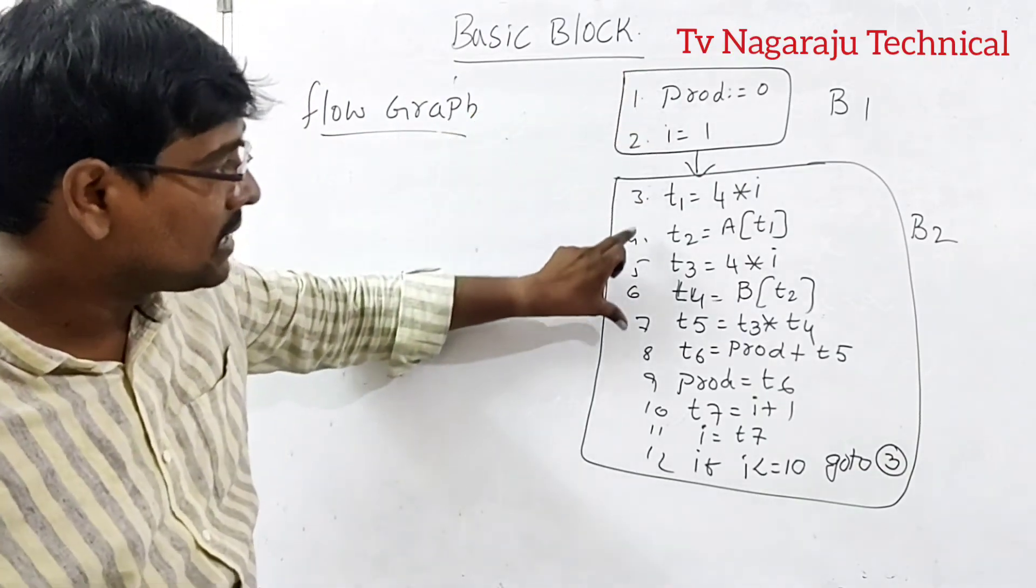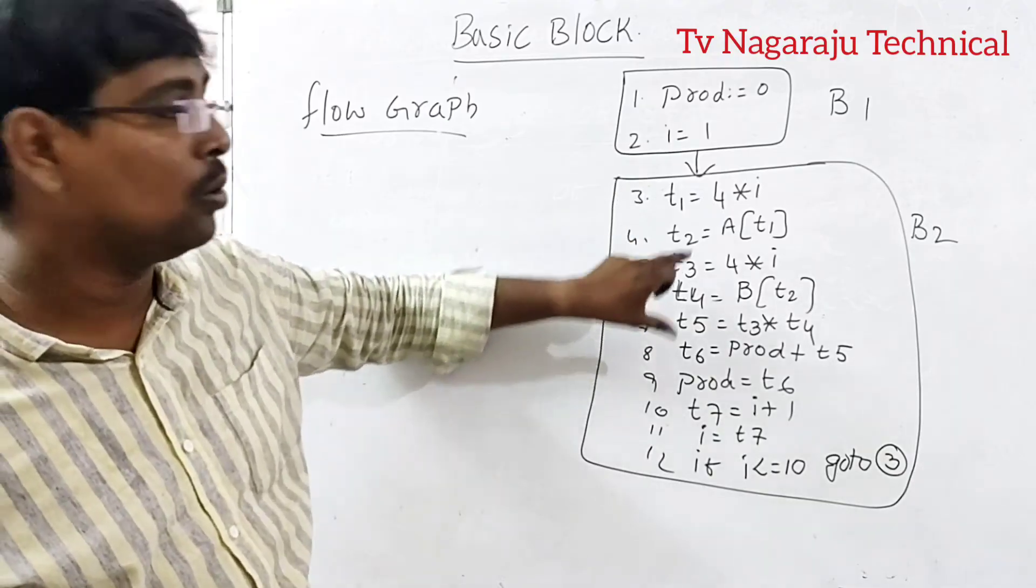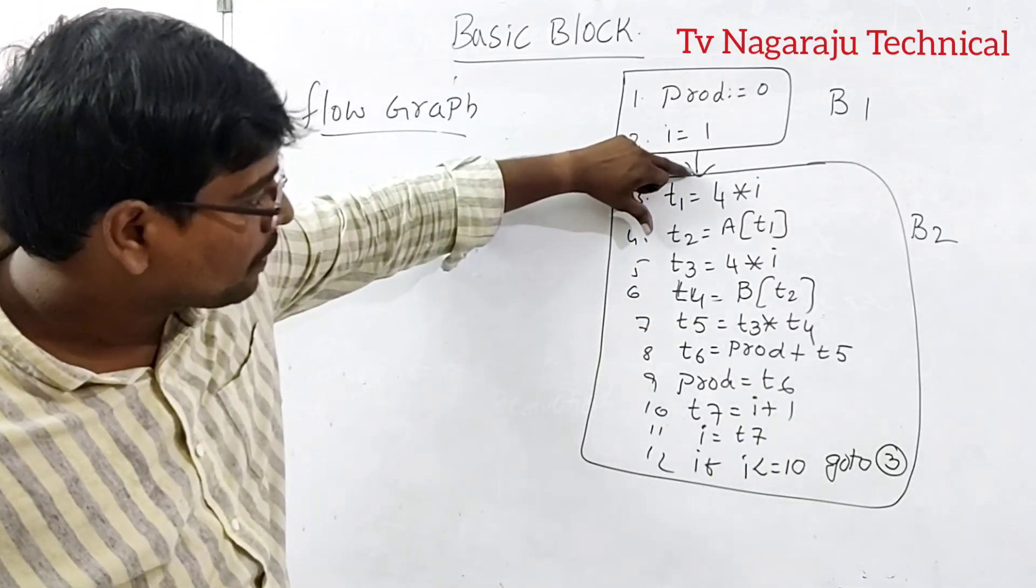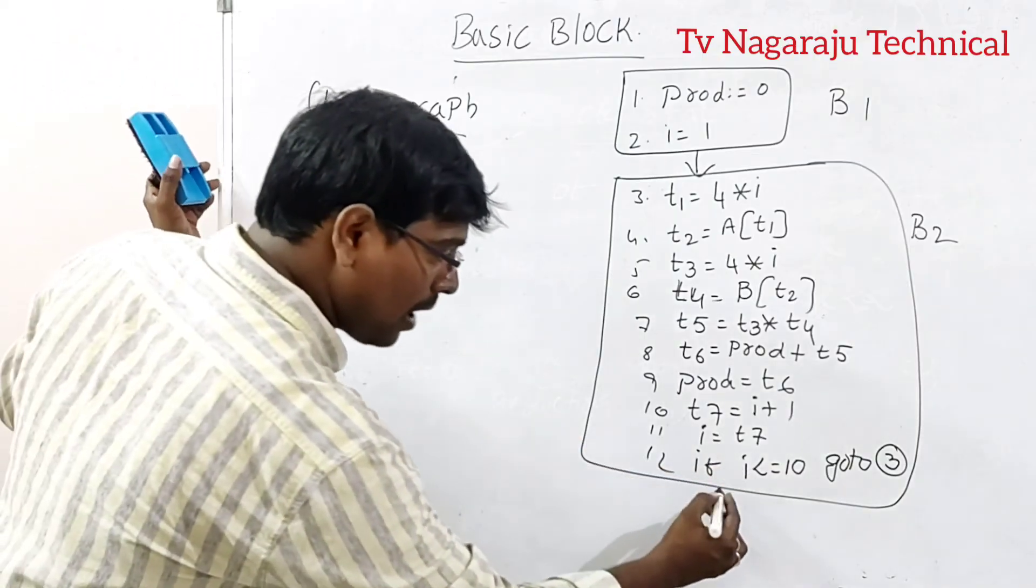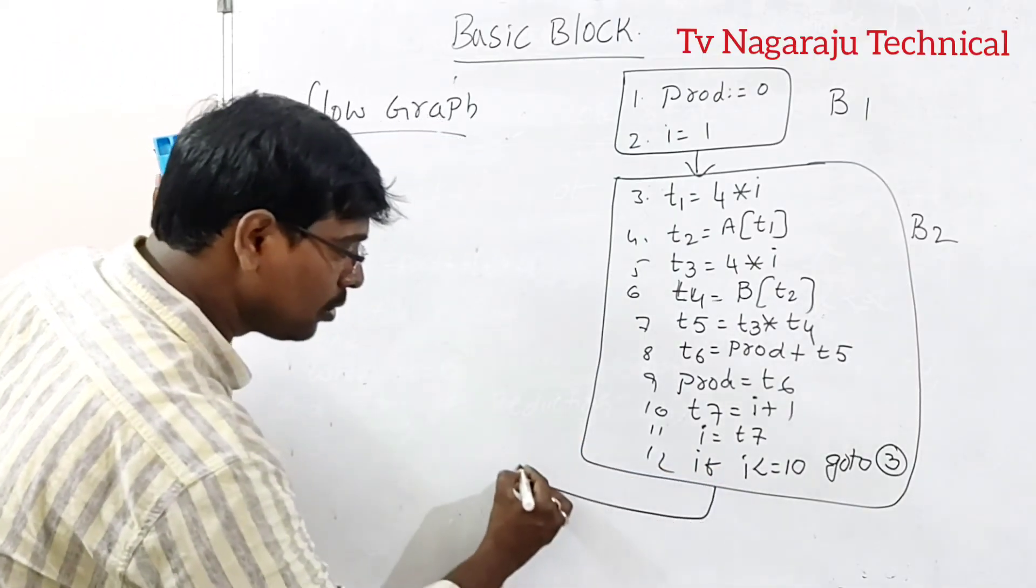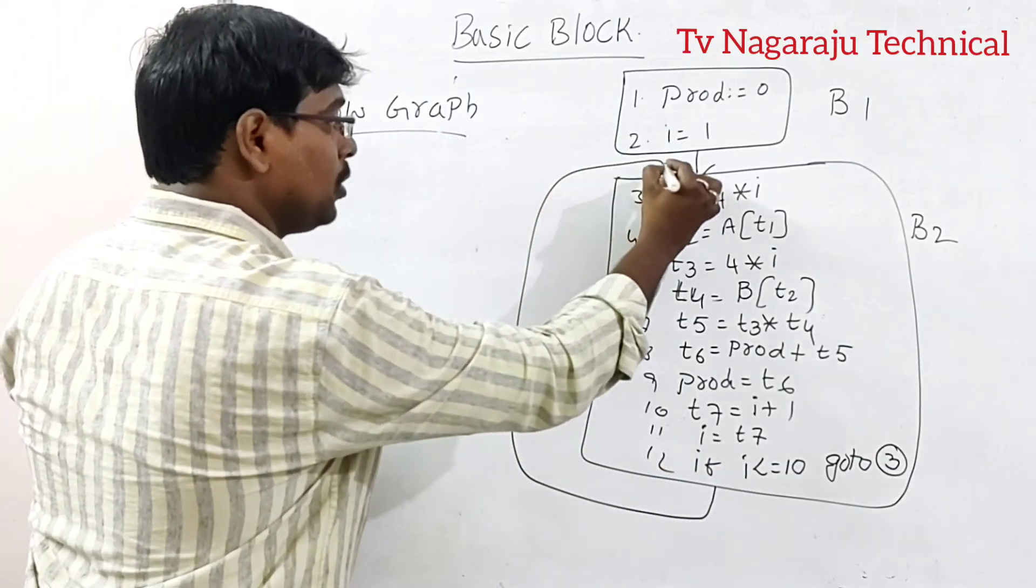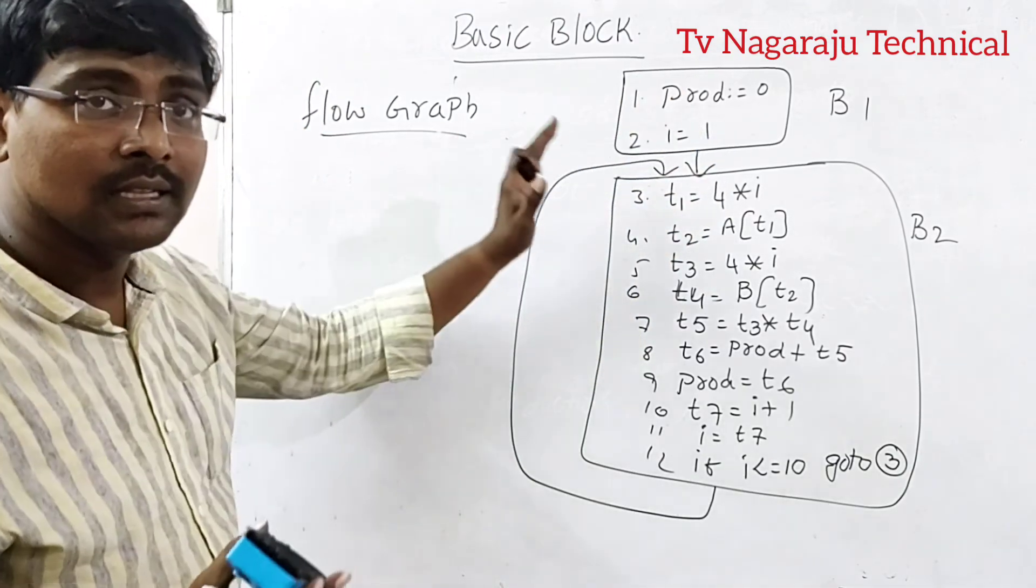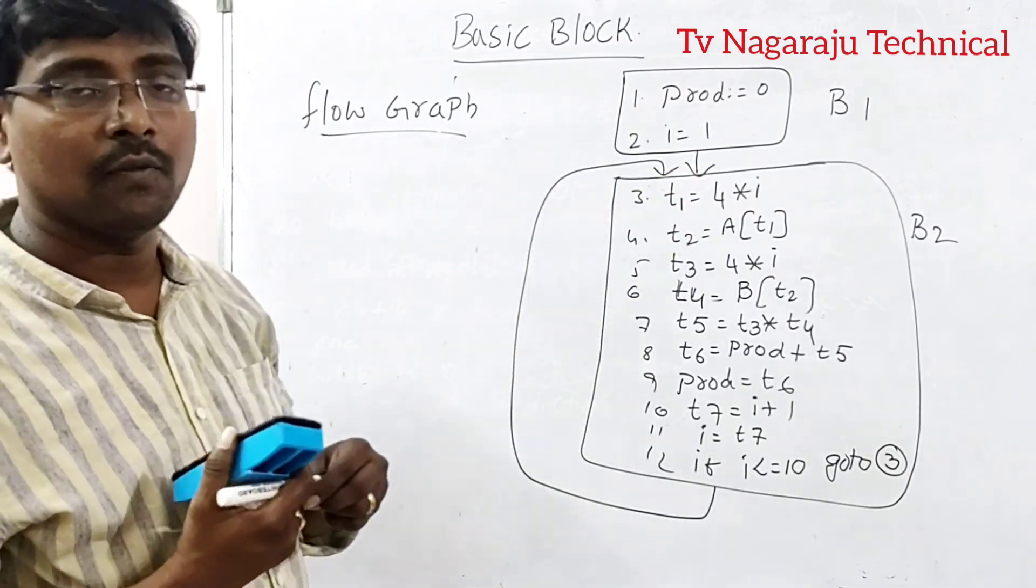The direction is represented as edges. Immediately after this one, where we are going? We are going to again this one. This is called flow graph. Now you understand what is meant by basic block and what is meant by flow graph.